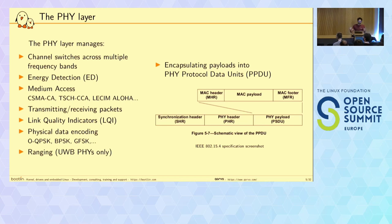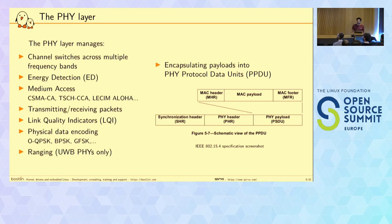The PHY layer has several things to handle, like changing channels. It can perform energy detection scans — basically sensing on a channel whether someone is transmitting, without listening to what's being sent. Then there's medium access; the main algorithm is CSMA-CA, carrier sense multiple access collision avoidance, which tries to avoid collisions. Of course you can transmit and receive packets. When you receive packets, you have access to a link quality indicator, the LQI, which gives you basically the signal strength from the device in front of you.